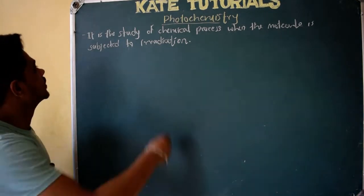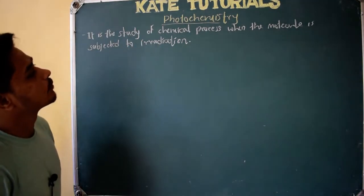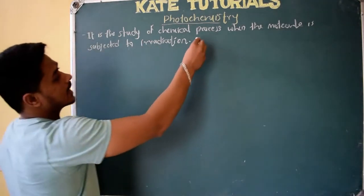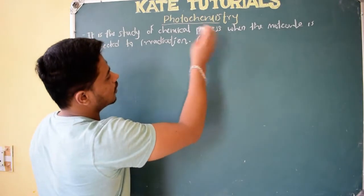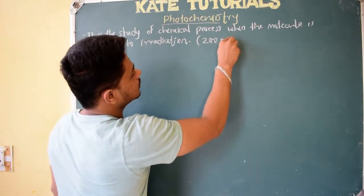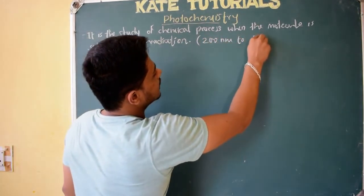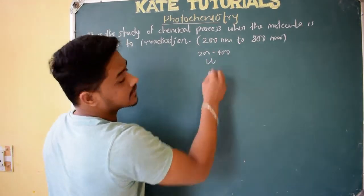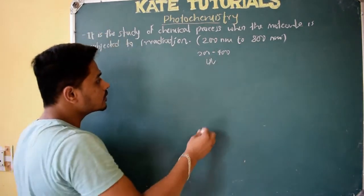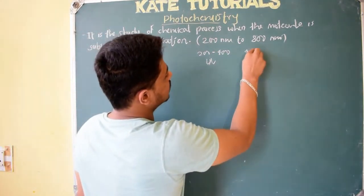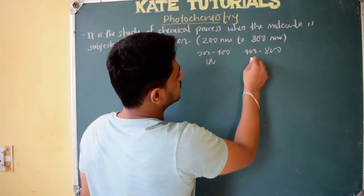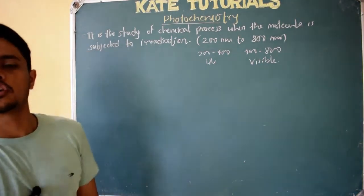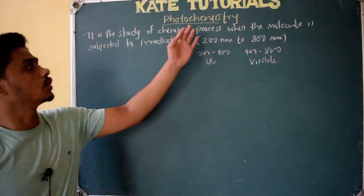The definition I have written on the board. Photochemistry is the study of chemical processes when the molecule is subjected to irradiation. We irradiate light of wavelength around 200 nanometer to 800 nanometer. You know that 200 to 400 nanometer is UV radiation, and from 400 to 800 nanometer it is visible light.